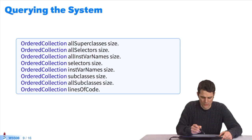There are many methods for querying the system. Here, I take ordered collection and send it lots of query messages. I'll get all of its superclasses, all of its selectors, the name of its instance variables, all of its subclasses, and all of its lines of code.